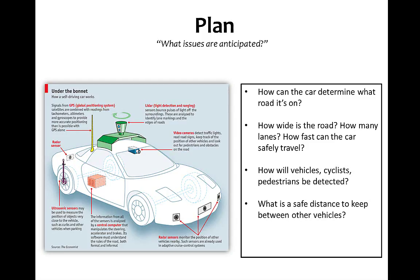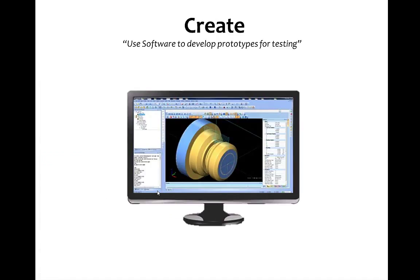Let's take a look at some of the planning. How might this car determine what road it's on, how wide it is, how many lanes, how fast it can safely travel? What happens when vehicles, cyclists, or pedestrians are detected? What is the safe distance to keep between other vehicles? Here we see a rough summary drawing explaining the basic components of their driverless technology, including GPS so the car knows where it is, ultrasonic sensors to detect position relative to other objects, radar sensors, and a video camera.